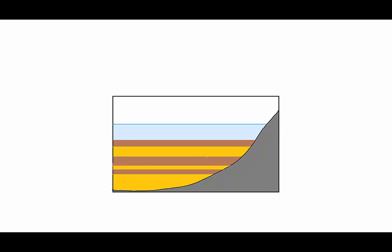Over time, the sand becomes cemented into sandstone, and the mud is compressed into shale, resulting in the distinct layers, or strata, of sedimentary rocks. Each flat layer is a bed — the flat surface that the sediment created as it settled out of the water for a very long rest.